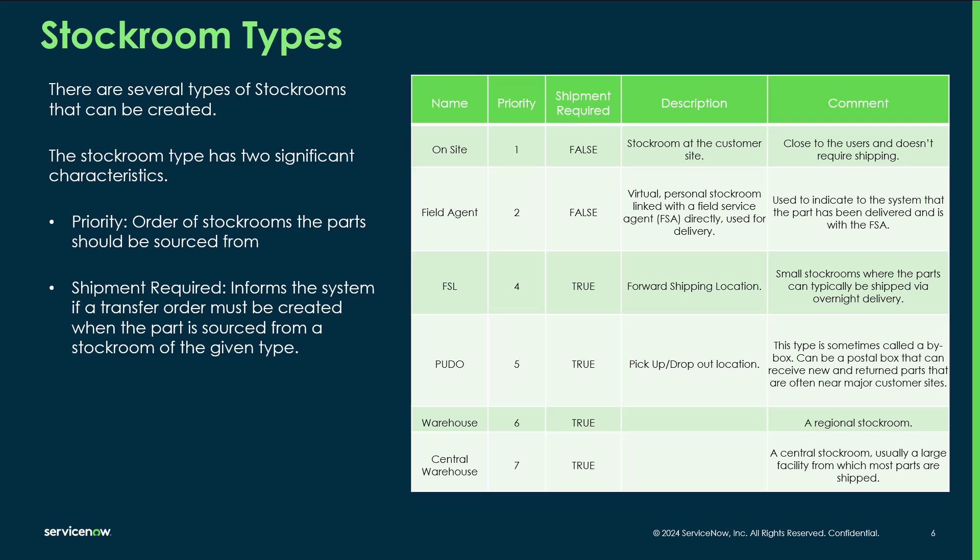There are different stock room types that can be created, and the type depends on the individual use case. There are two important characteristics: priority and shipment. Priority is the order from which the stock room parts should be sourced. For example, a field agent stock room has a priority of two, so if it contains the required part, it gets priority over the central warehouse and will be sourced first.